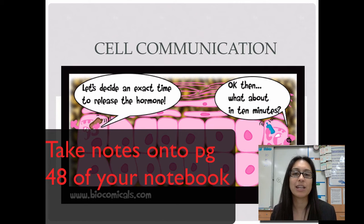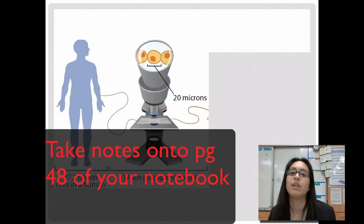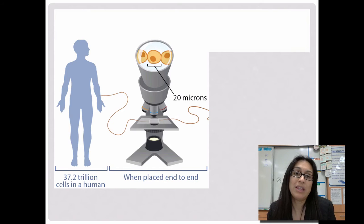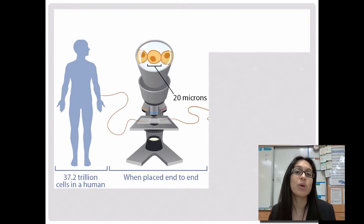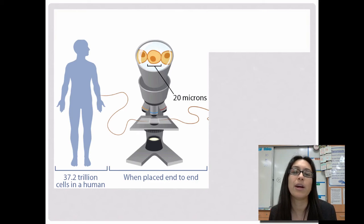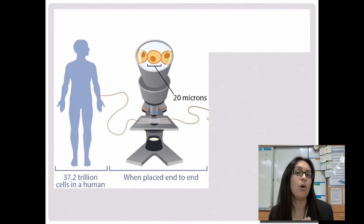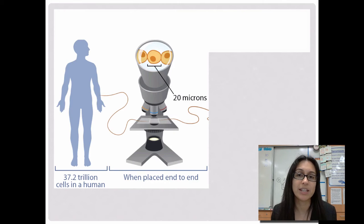Hey Mustangs, in this video we're going to be taking a look at cell communication. Before we get started, we have to understand that when we look at ourselves, we think of ourselves as an individual, one single organism, but in reality we're actually trillions of cells — trillions of individual organisms all working together as one. That's going to be the case for all multicellular organisms.